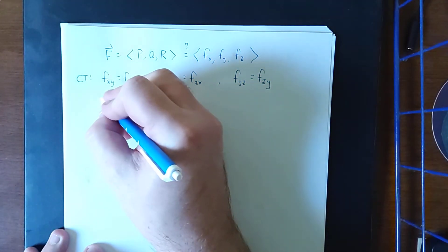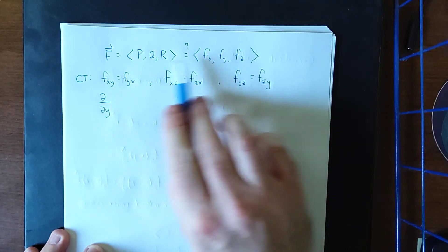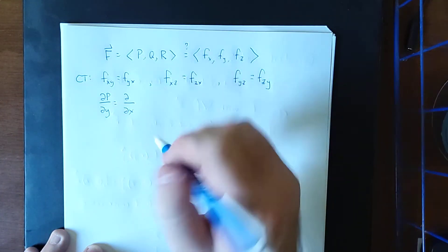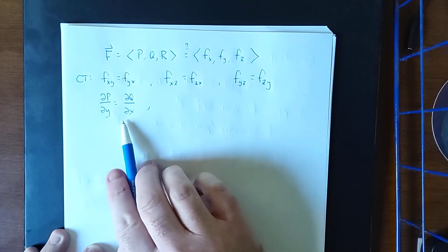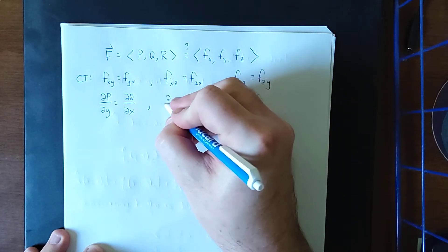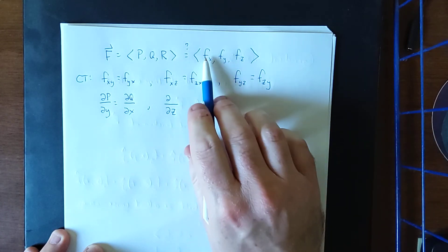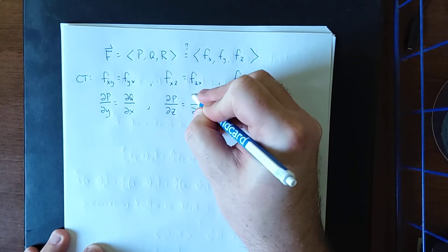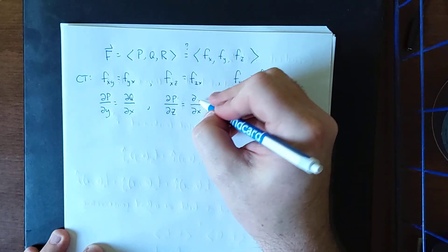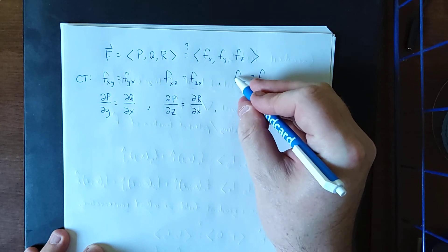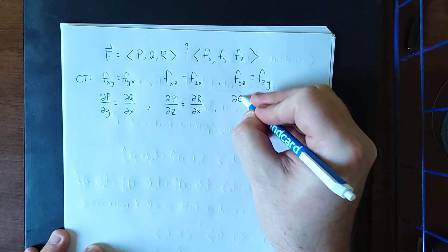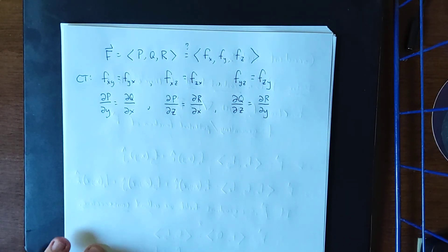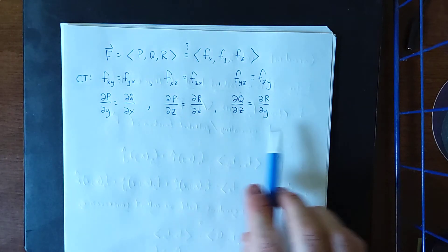Specifically: take the partial of P with respect to y and compare it to the partial of Q with respect to x — this is the same condition as the 2D case. Then take the partial of P with respect to z and compare it to the partial of R with respect to x. Finally, take the partial of Q with respect to z and compare it to the partial of R with respect to y. To show that your three-dimensional vector field is conservative, all three of these equalities must hold.